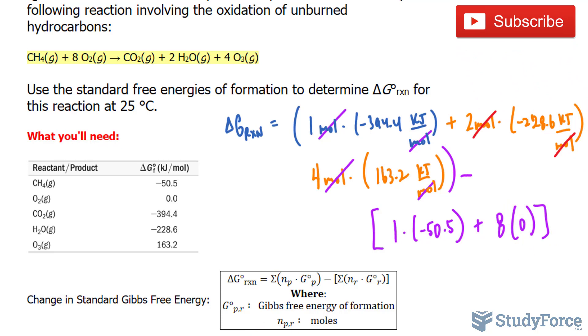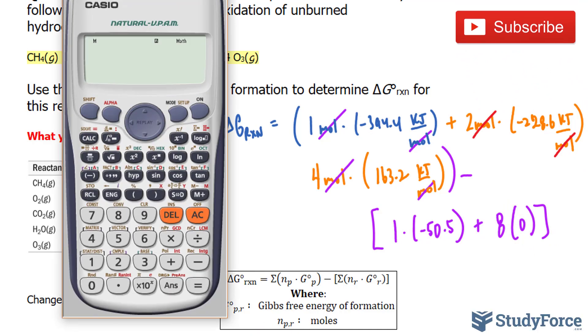Now we can use our calculator. Starting with the products: negative 394.4 plus 2 times negative 228.6 plus 4 times negative 163.2, close bracket, minus the reactants.